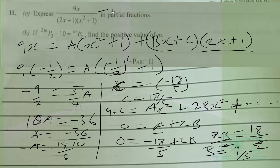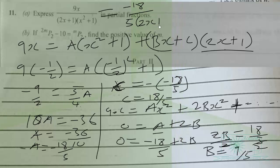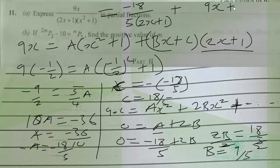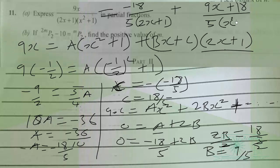So the partial fraction is: −18/5 over (2x + 1), plus (9x/5 + 18/5) over (x² + 1).